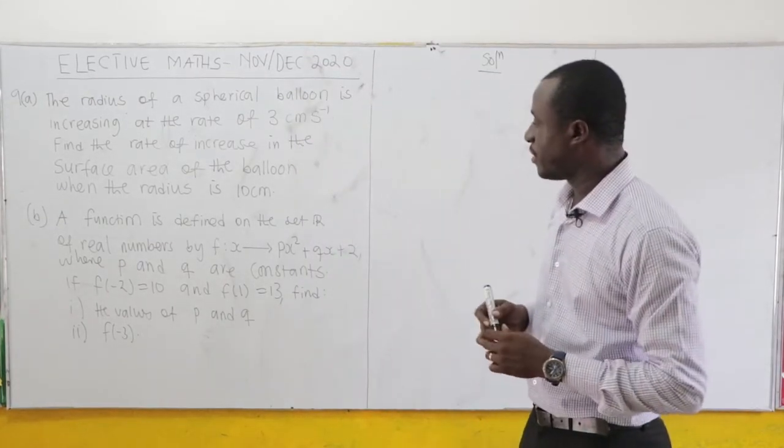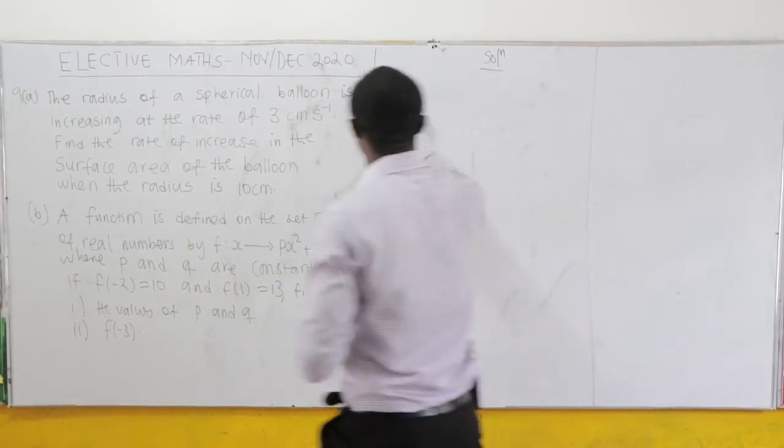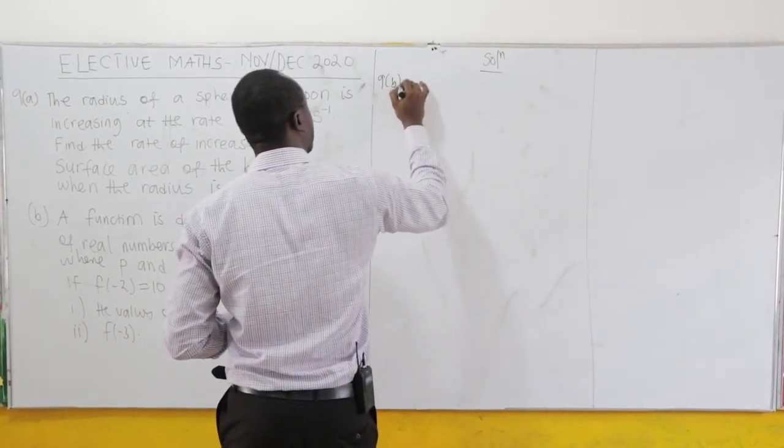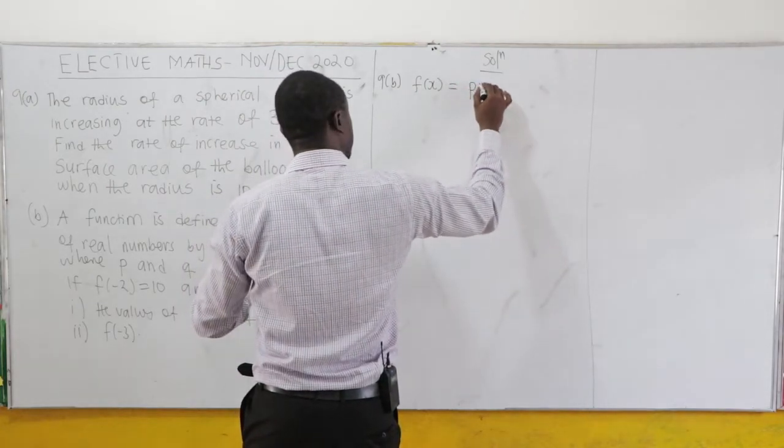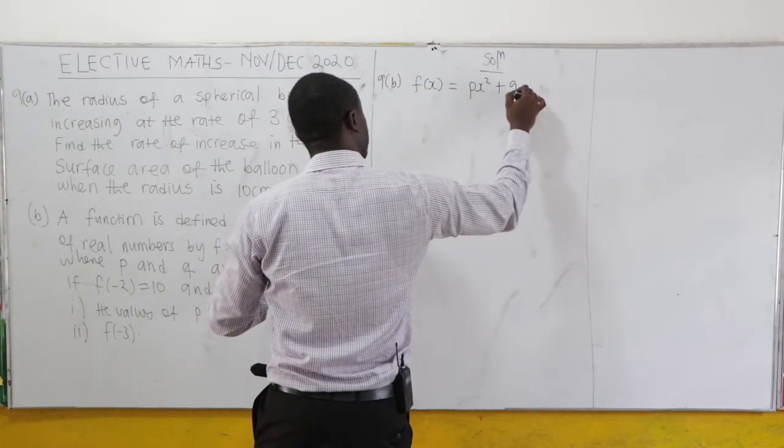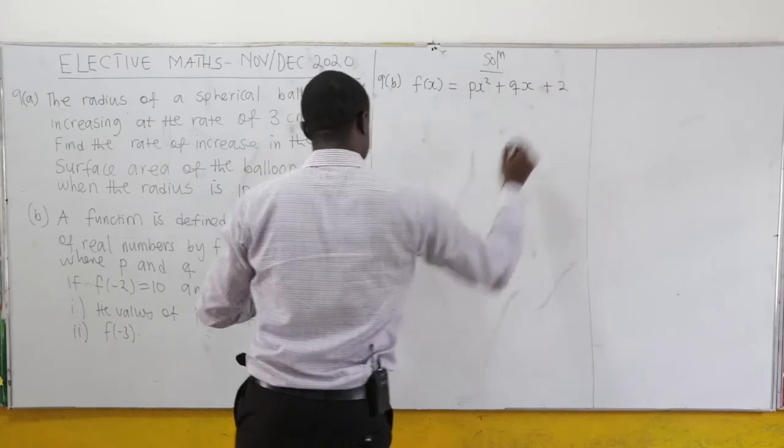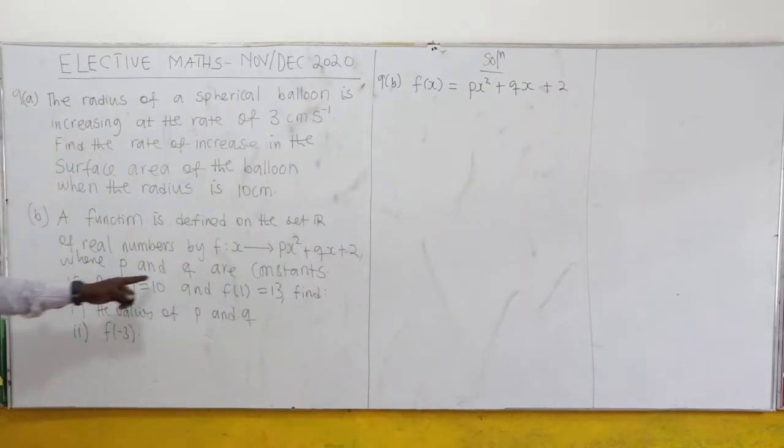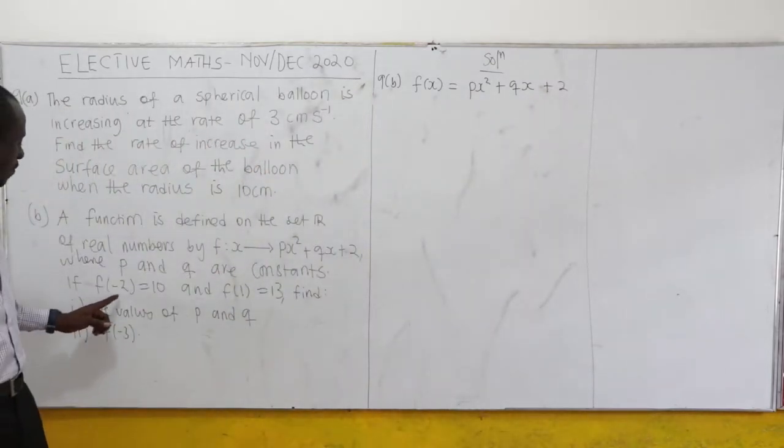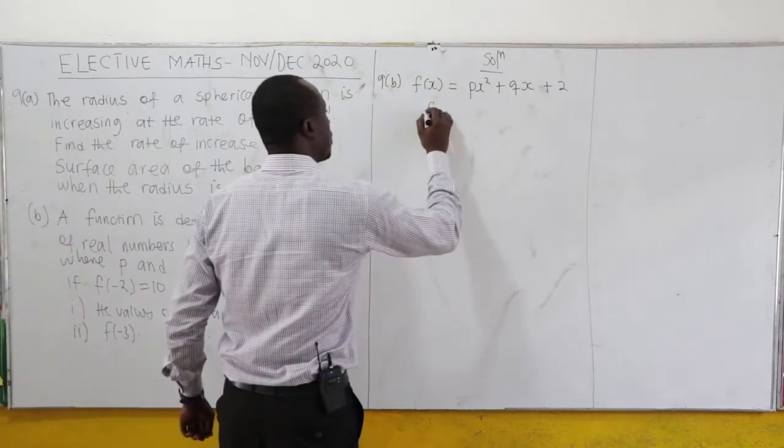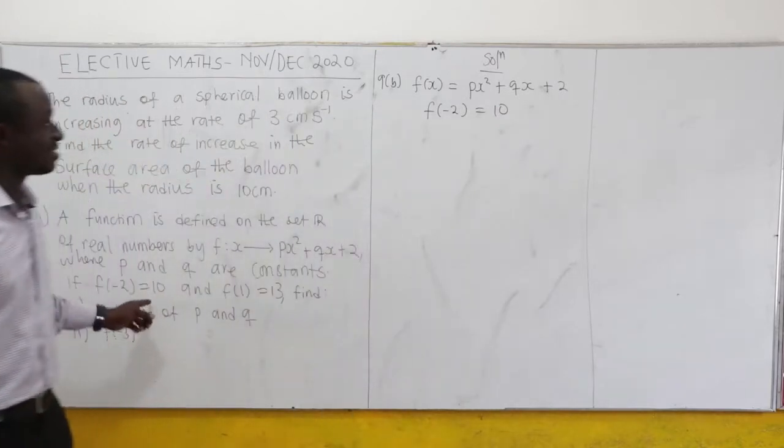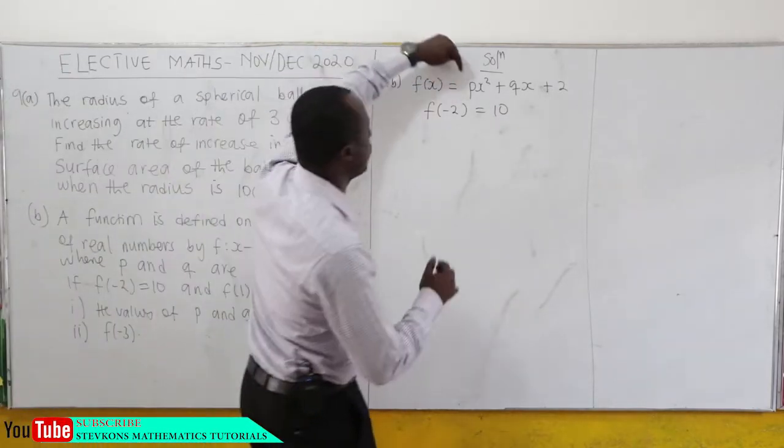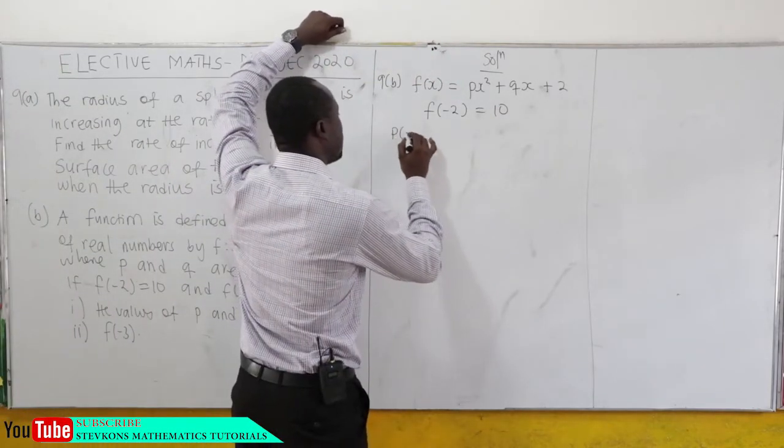A function f is defined on the set of real numbers by f(x) = px² + qx + 2, where p and q are constants. If f(-2) = 10, we substitute -2 for x.